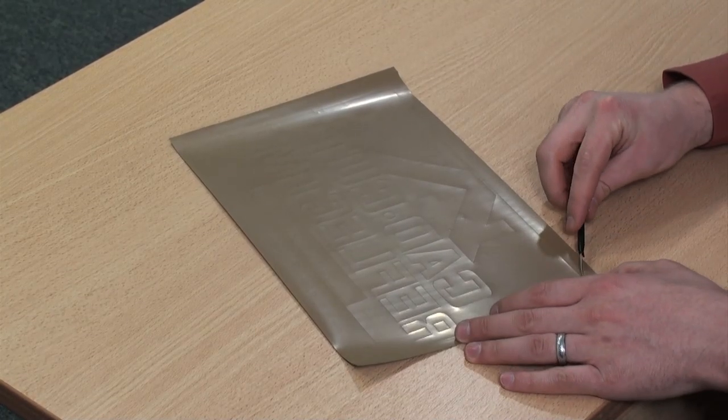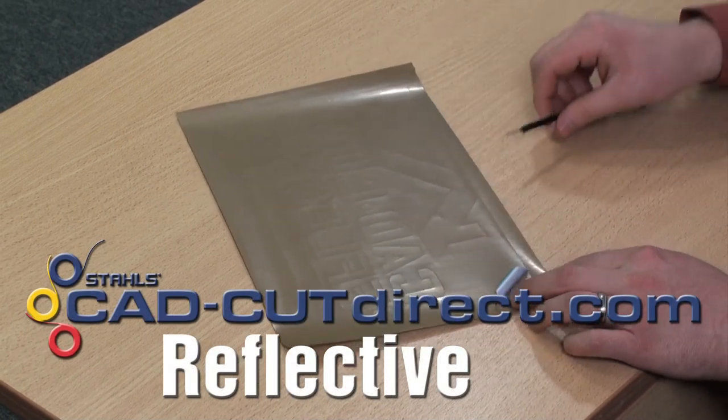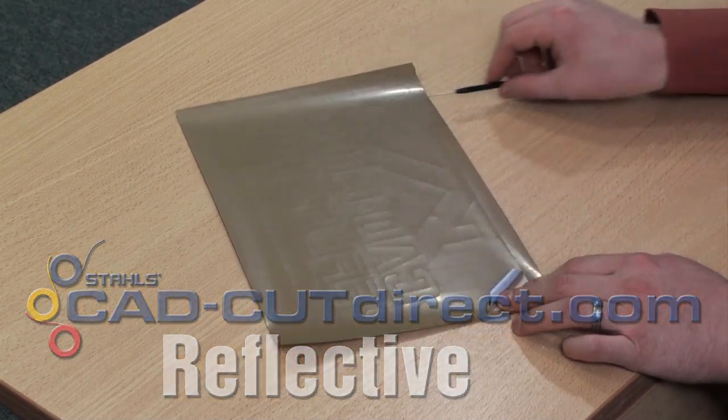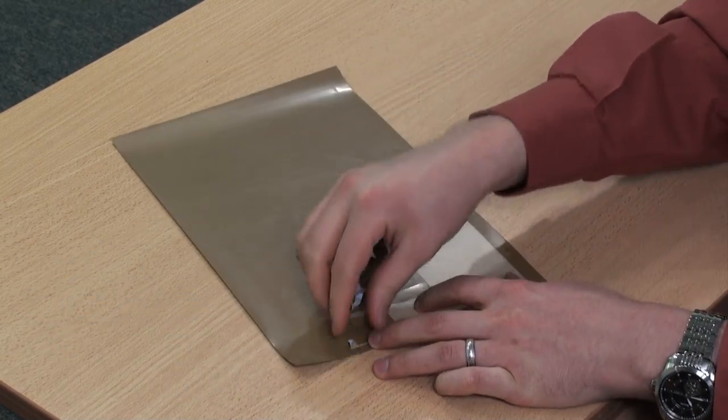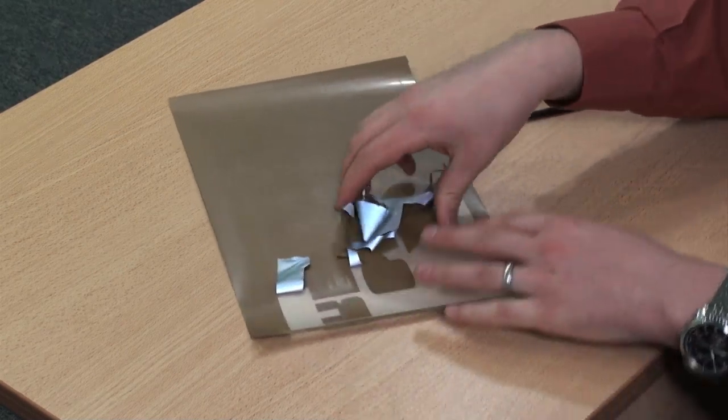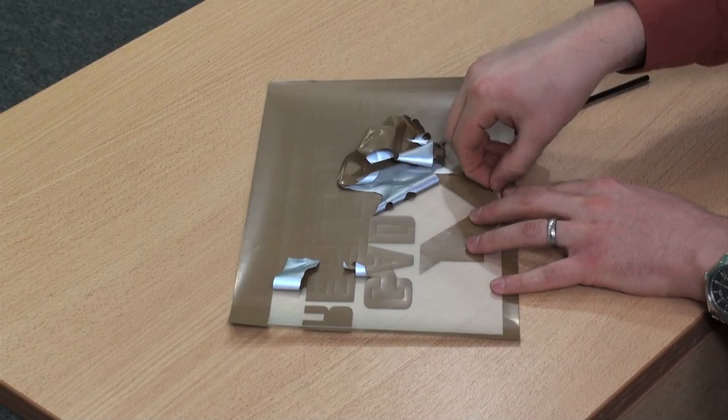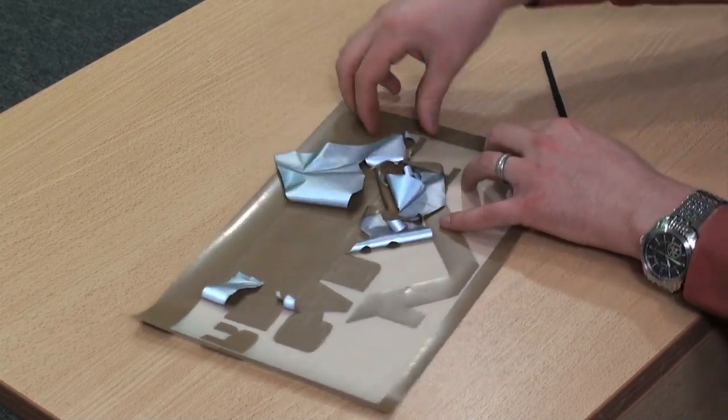Now that the designs are cut, we'll complete the weeding process on all three samples. First the CAD-CUT reflective. Very easy to weed, very easy to see the cut lines. Non-pressure sensitive backing, so it peels very easy.